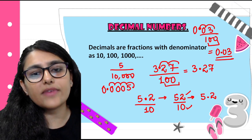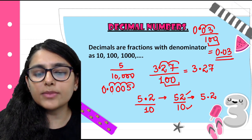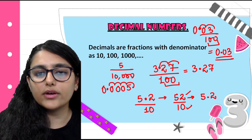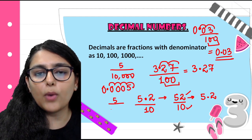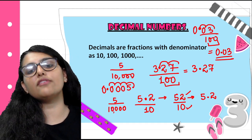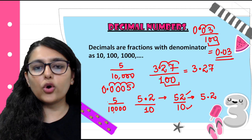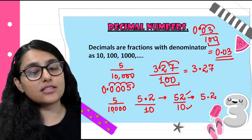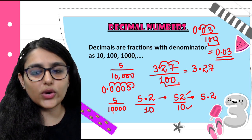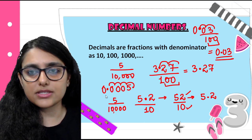Now when I want to convert back from decimal to fraction: how many numbers are after the decimal? 1, 2, 3, 4. So I write 5 upon 10,000. So I hope it's clear to everyone. We have done decimals in our earlier classes — in 6th grade we covered decimals — so I hope you have no problem with the basics and concepts of decimals.